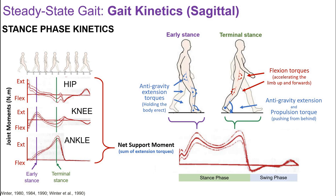In terminal stance, we have a relatively small flexion torque at the hip and the knee, and a large extension torque at the ankle. These combine to create the net support moment, so the ankle is responsible for creating the net support moment in this part of the gait cycle and is entirely responsible for the anti-gravity leg extension function. The ankle also performs the function of generating a propulsive force that pushes the body forwards from behind. The torques at the hip and the knee act to start accelerating the limb up and forwards.